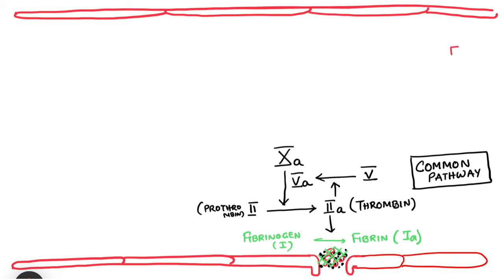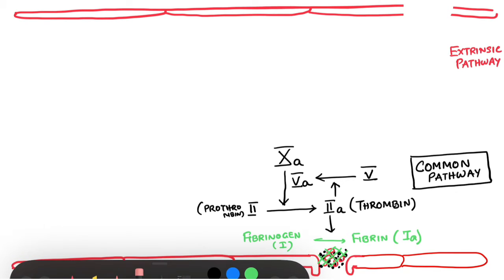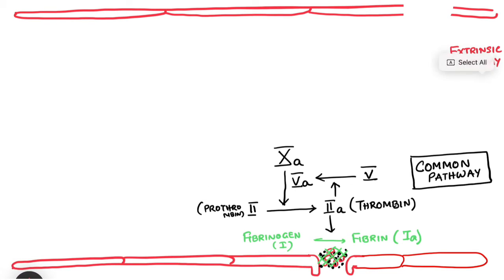Let's start talking about the extrinsic pathway. Why extrinsic? Because this pathway is activated by a trauma so severe that substances or tissues outside the blood vessel play a role. That means, there will be such a severe trauma that the entire depth of the blood vessel gets damaged and enters a factor known as tissue factor from outside tissue into the blood vessel. This tissue factor is also known as factor 3.